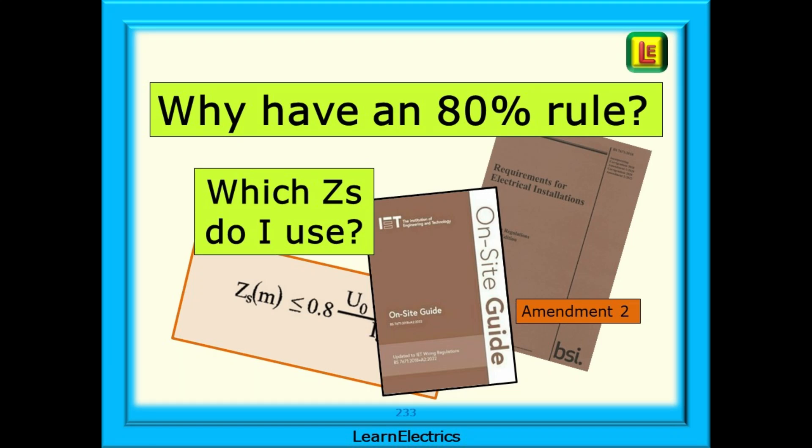This LearnElectrics video looks at ZS measurements that we might make on site, the so-called 80% rule.